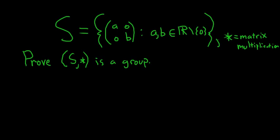In this video we're going to prove that the set S together with the binary operation of matrix multiplication forms a group. S is the set of all 2 by 2 matrices of diagonal form, where the diagonal entries A and B are both non-zero real numbers.